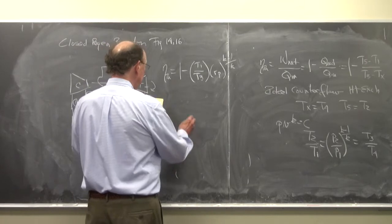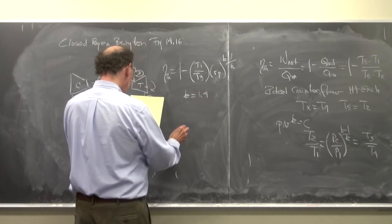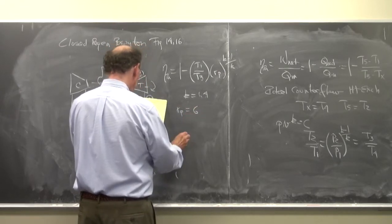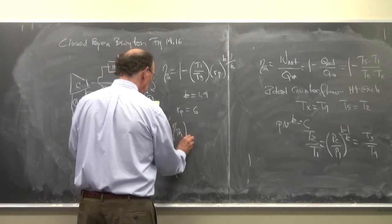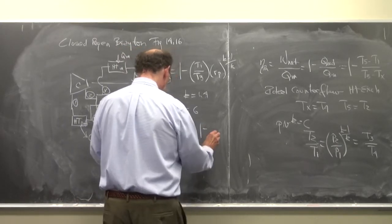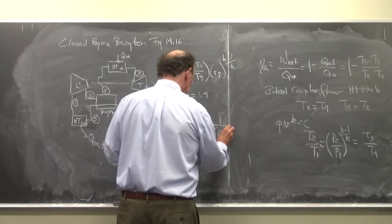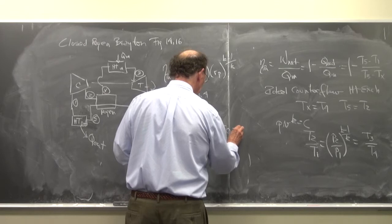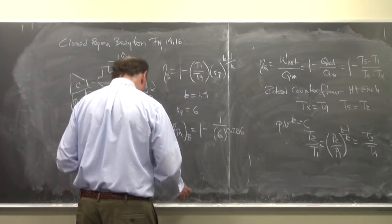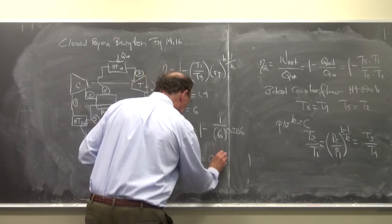So let's say if we're going to use K as 1.4, let's say that R sub P is equal to 6, and the thermal efficiency of the Brayton cycle is equal to 1 minus 1 over 6 to the 0.286. And so this is equal to 0.4.